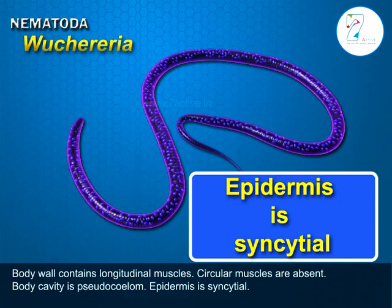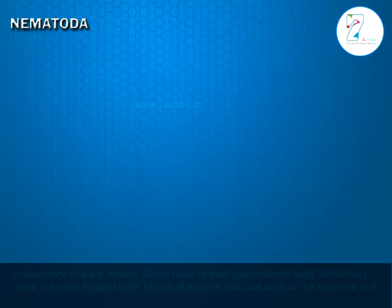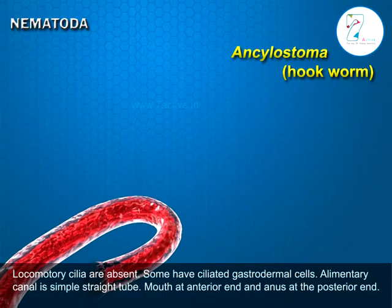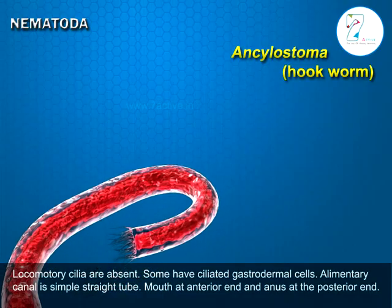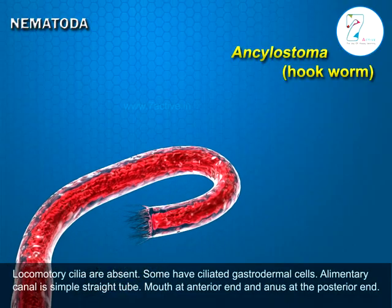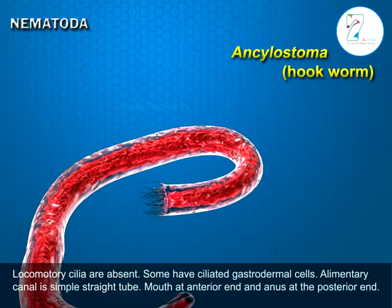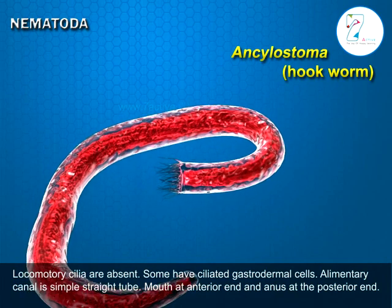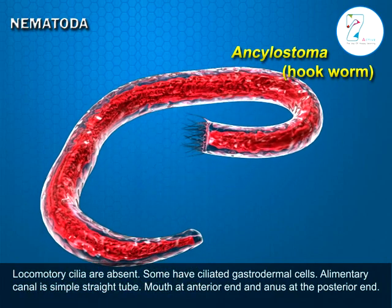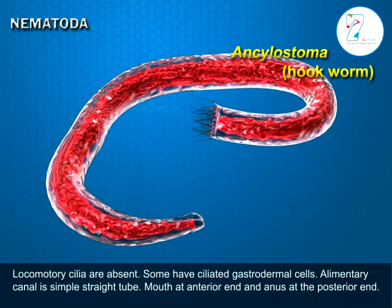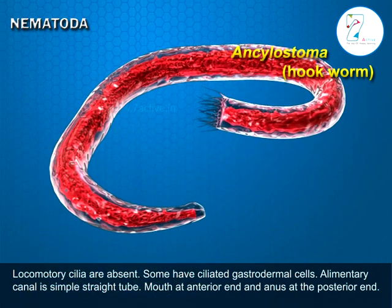The epidermis is syncytial. Locomotory cilia are absent, though some nematodes have ciliated gastrodermal cells. The alimentary canal is a simple straight tube.